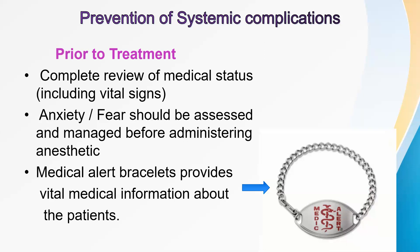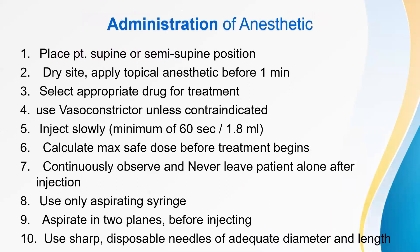Prevention of systemic complications prior to treatment: Complete review of medical status including vital signs. Anxiety and fear should be assessed and managed before administering anesthetic. A medical alert bracelet provides vital medical information about patients. During administration of anesthetic: place the patient in supine or semi-supine position, dry the site, apply topical anesthetic before injection, select appropriate drug, use vasoconstrictor unless contraindicated, inject slowly at the rate of 60 seconds per 1.8 ml, calculate maximum safe dose before treatment, continuously observe and never leave the patient alone after injection, use only aspirating syringe, aspirate in two planes before injecting, and use sharp disposable needles of adequate diameter and length.